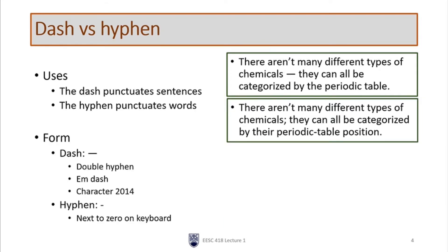Before we look at these individually, let's look at some of the differences between the dash and the hyphen, because these are often confused. Remember that the hyphen is the short version and the dash is the long version. The hyphen is a short line that we put between words to hyphenate or combine them. The dash punctuates the sentence; the hyphen punctuates the word, and you can see examples of that on the right.